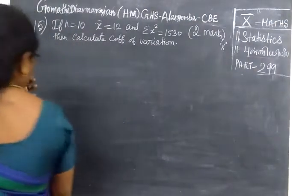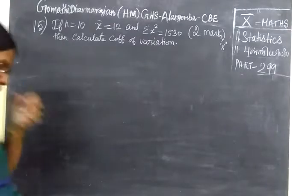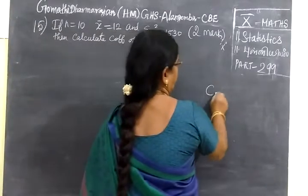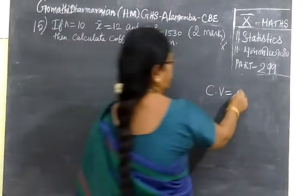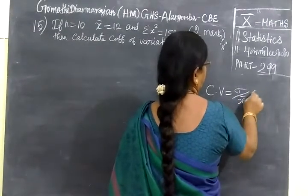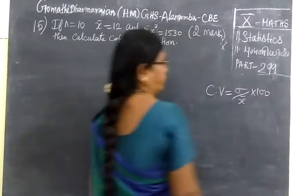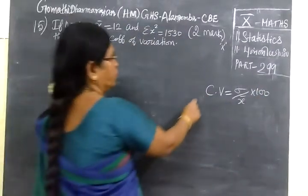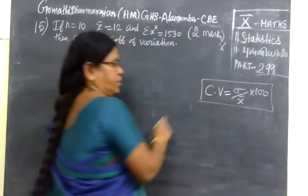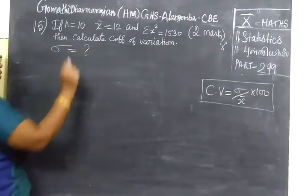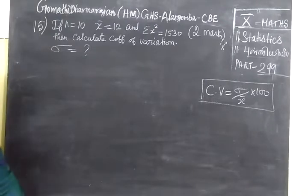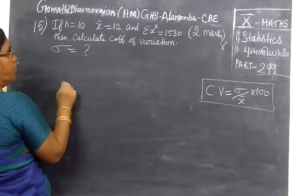Now we have to find the calculator coefficient of variation. So coefficient of variation is CV. CV means coefficient of variation, Sigma by X bar into 100. This is the coefficient of variation. So for that, we have to first find Sigma. After Sigma, how do we get this? In the formula we use for that.